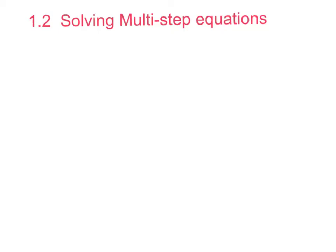Let's do the example: 3x plus 1 equals 13. Multi-step means more than one step. Keep in mind that your goal is to use inverse operations to isolate the variable. You have to get the variable — which in this problem is x — by itself.